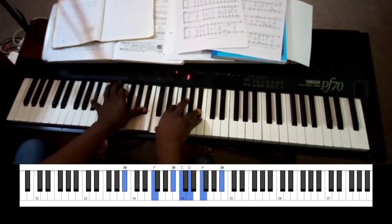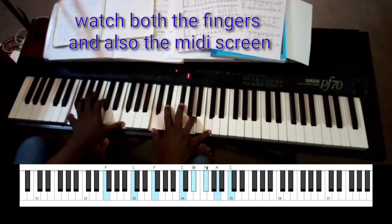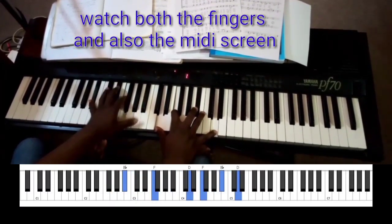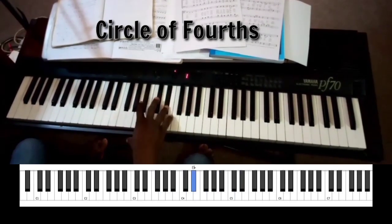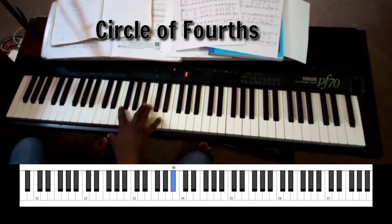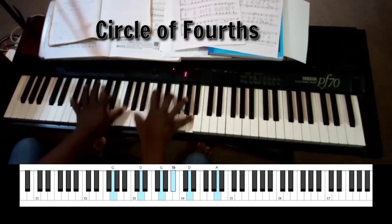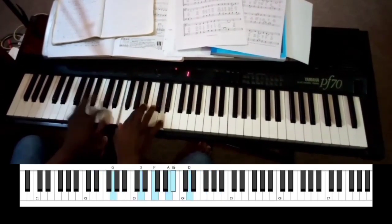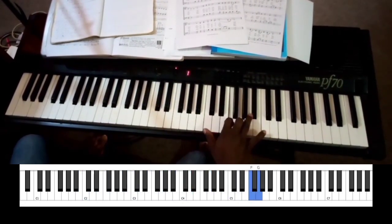So we're in the key of Bb now, and we have a 2-5-1. Now we have 2-5-1-4-7-3-6-2-5-1-4. So we have a 7-3-6-2-5-1-4-7-3-6. That's how progressions move.